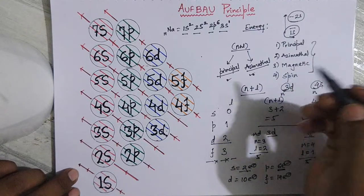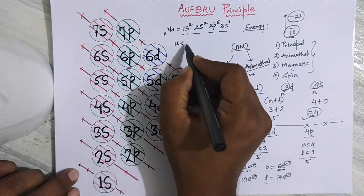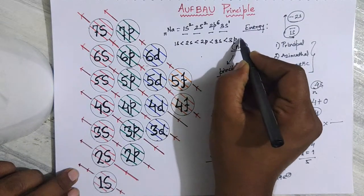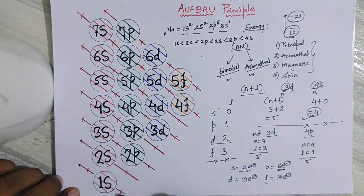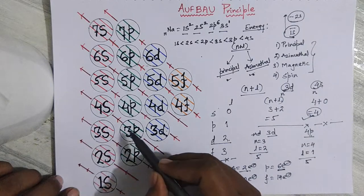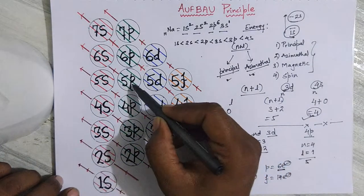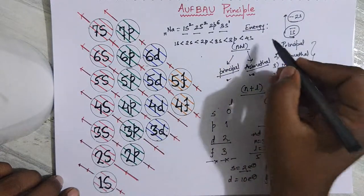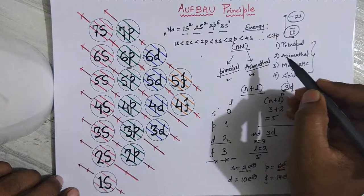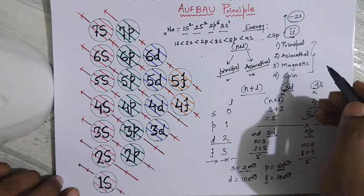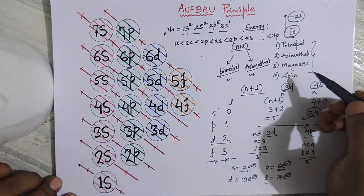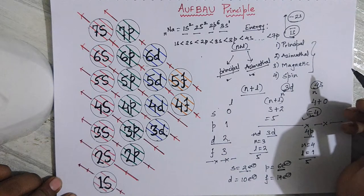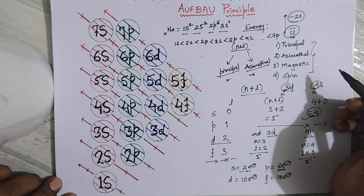To summarize the energy sequence: 1s < 2s < 2p < 3s < 3p < 4s < 3d < 4p < 5s < 4d < 5p < 6s < 4f < 5d < 6p < 7s < 5f < 6d < 7p. The 7p orbital has the highest energy, requiring the most energy to fill. This was a brief introduction to the Aufbau principle — stay tuned for upcoming videos on Hund's rule and the Pauli Exclusion principle.